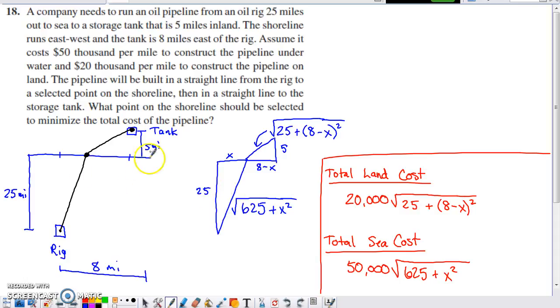I turned this overall diagram into two separate triangles. The one addition I made to the diagram is I defined the variable x. I defined x to be the horizontal distance from the rig over to the spot on the shoreline where we're going to emerge from the water with our pipeline. Then the rest of this distance would be the full eight miles minus the x miles we've already gone. So I have these two right triangles, and I used the Pythagorean theorem to figure out what the hypotenuse of each would be.